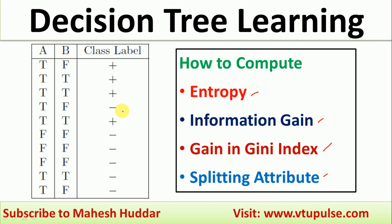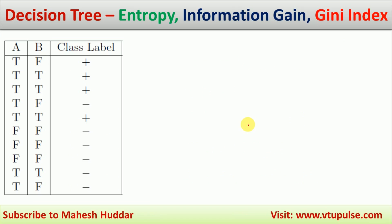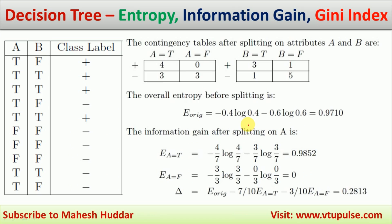First we will try to identify the entropy and then the information gain. To find the entropy, first we will try to write the contingency table. The contingency table looks something like this.